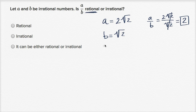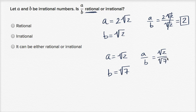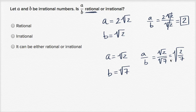But what if A was equal to the square root of two and B is equal to the square root of seven? Then A over B would be equal to the square root of two over the square root of seven, which is the square root of two-sevenths — and since two-sevenths is not a perfect square, we end up with an irrational number. So we can show one example where A over B is rational and one where it is irrational — it can be either way.